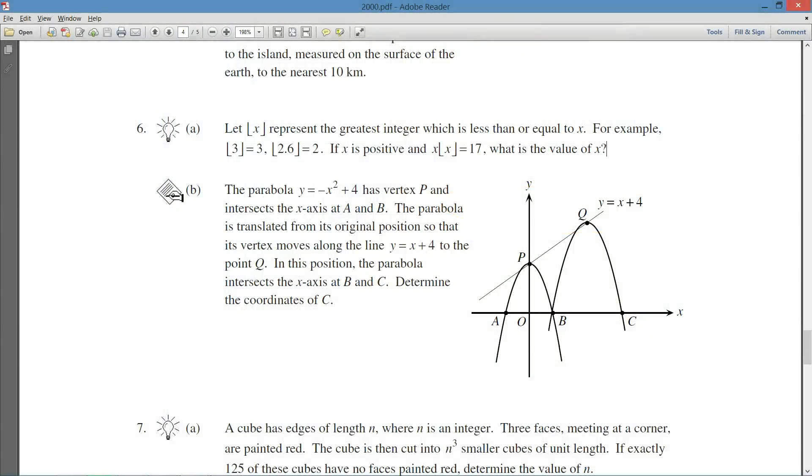B part. We need a written solution here. The parabola, y = -x² + 4, has vertex P, and intersects the x-axis at A and B. The parabola is translated from its original position so that the vertex moves along the line y = x + 4 to the point Q. Since this is a downward-facing parabola, the vertex will be the highest point. And, fortunately, they did give the parabola in vertex form, so it will be very easy to extract the value of P and, hopefully, maybe the value of Q. In this position, the parabola intersects the x-axis again at B, but also now at point C. Determine the coordinates of C.